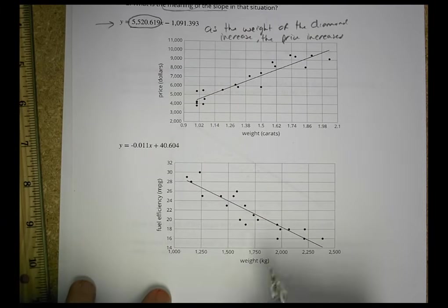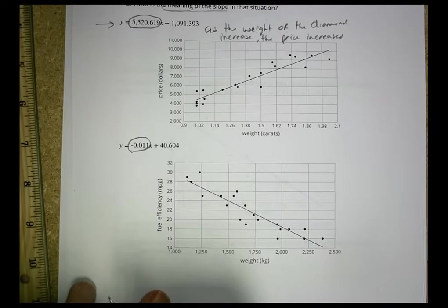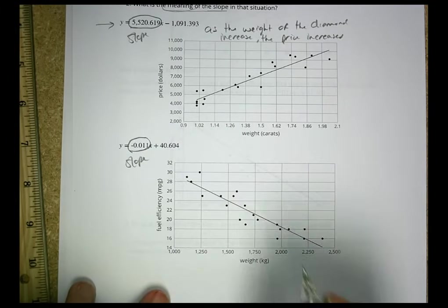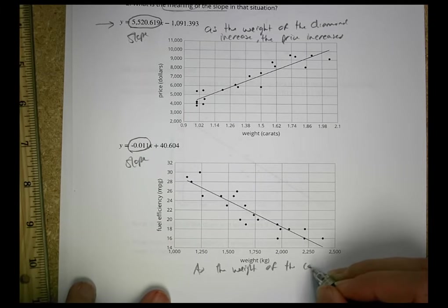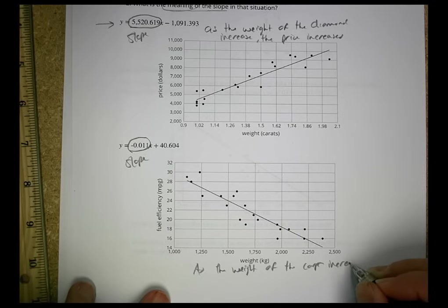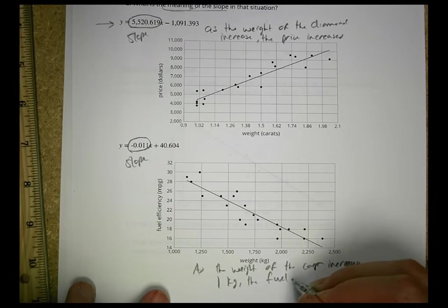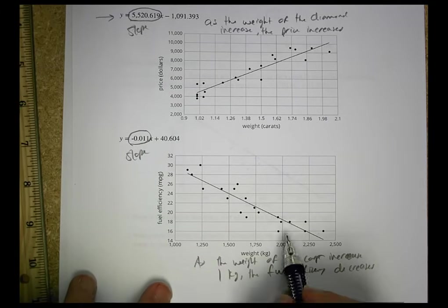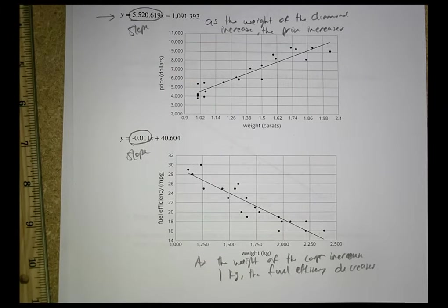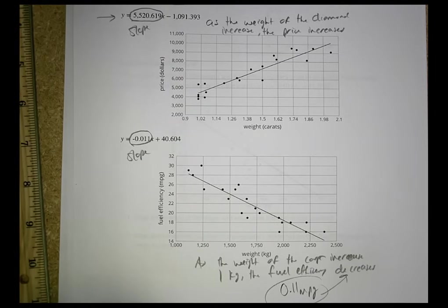For the next one, we can see it's weight and fuel efficiency. And our slope is negative 0.11. That's our slope. And what is it telling us is that as the weight of the car increases 1 kilogram, the fuel efficiency decreases that much. So as this goes up 1 kilogram or more, then the fuel efficiency decreases in that same rate, decreases at a rate of 0.11 miles per gallon. That's the decrease you're going to see happening, as well as the plus the 40.6.